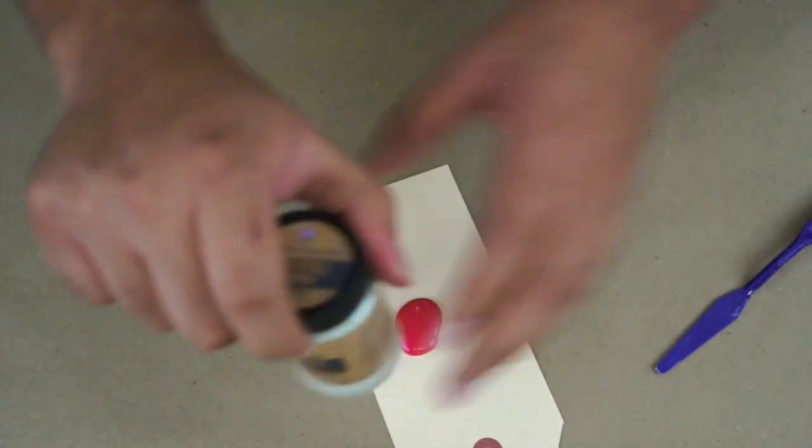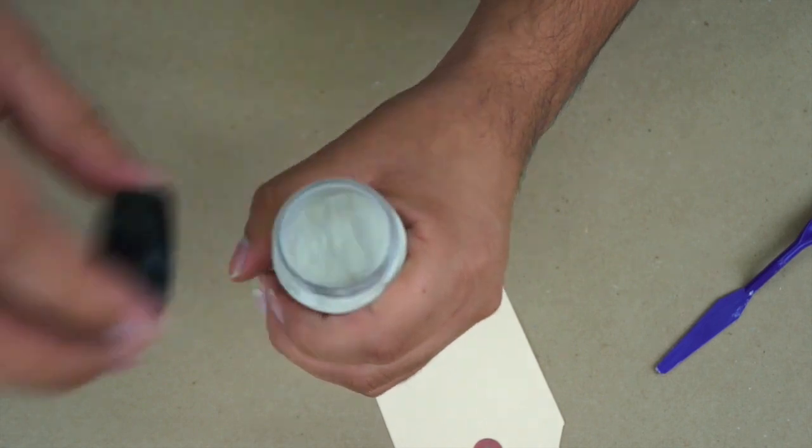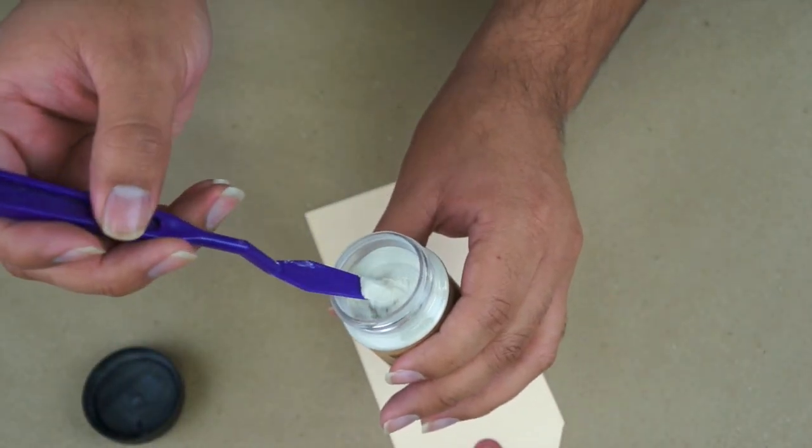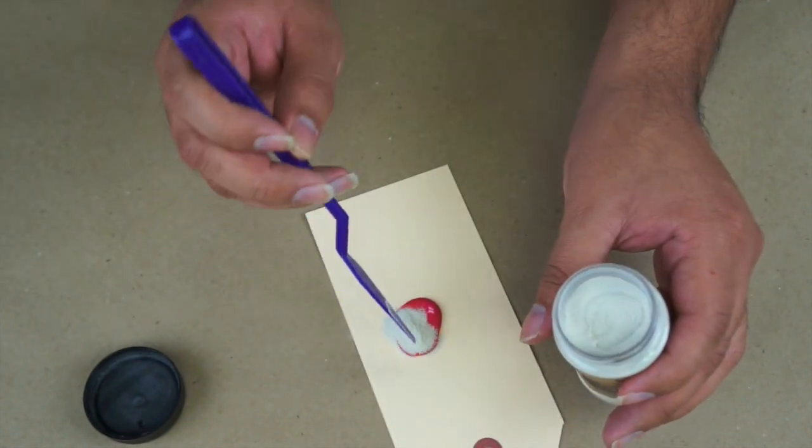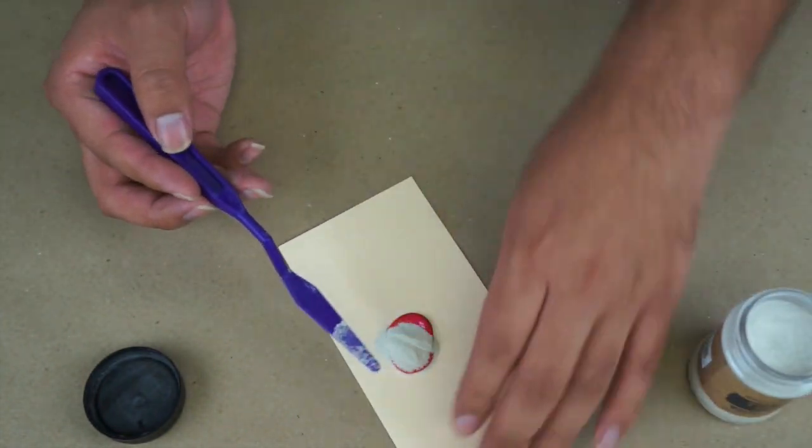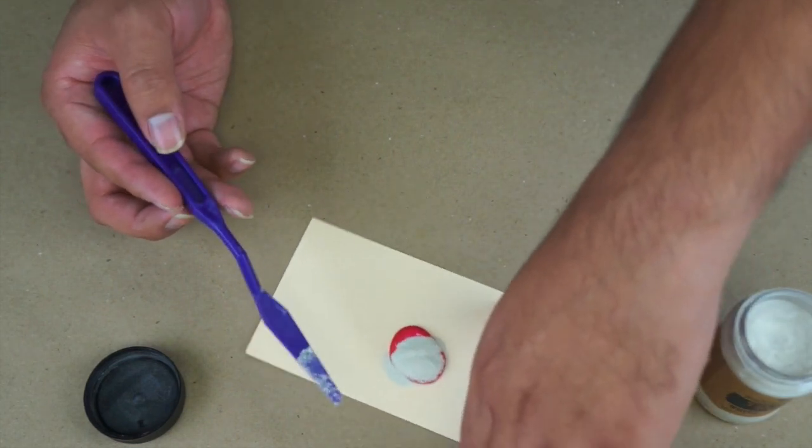And then I'm going to take a little bit of the texture powder, and you can see it's a very fine, loose powder. I'm just going to take a little bit of that powder, add it onto my paint, and mix it.